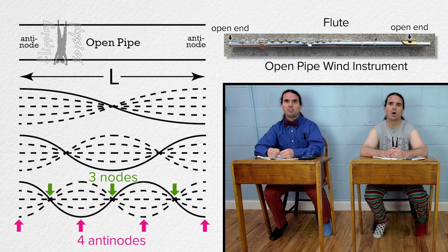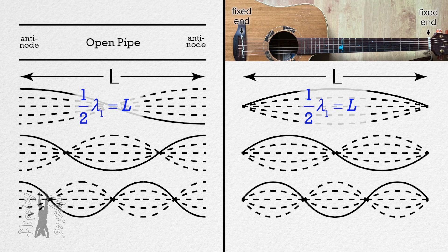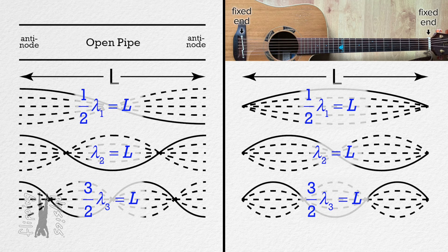Wait — I think this is the same as the stringed instrument standing wave pattern. No, it's not. Look at the stringed instrument standing wave patterns; they are clearly different. What I mean is the wavelengths of the wave for each standing wave pattern are the same. For example, the first standing wave patterns both have half a wavelength equal to L, the length of the string or pipe. The second patterns both have one full wavelength equal to L, and the third patterns both have one and a half wavelengths equal to L.